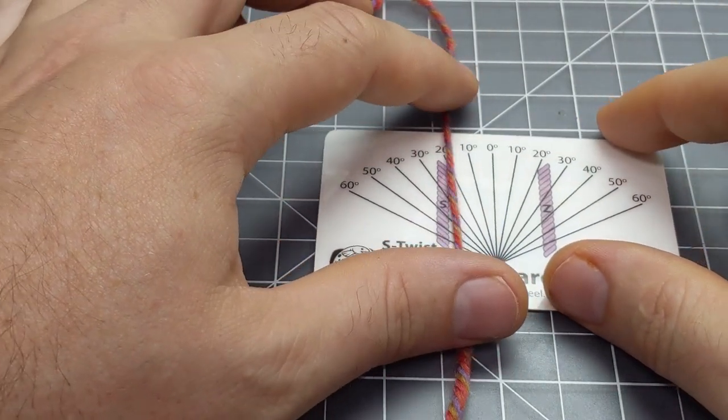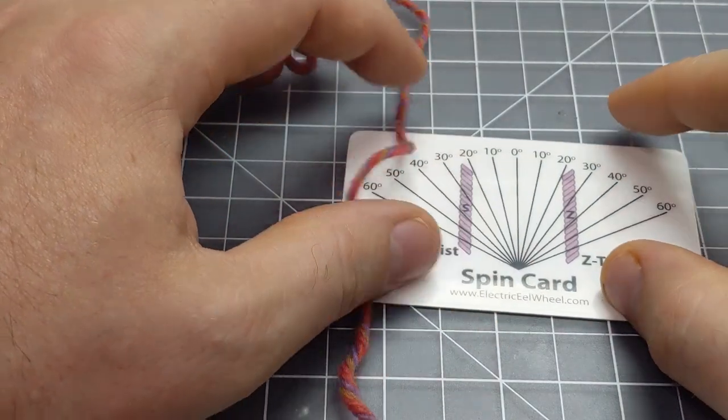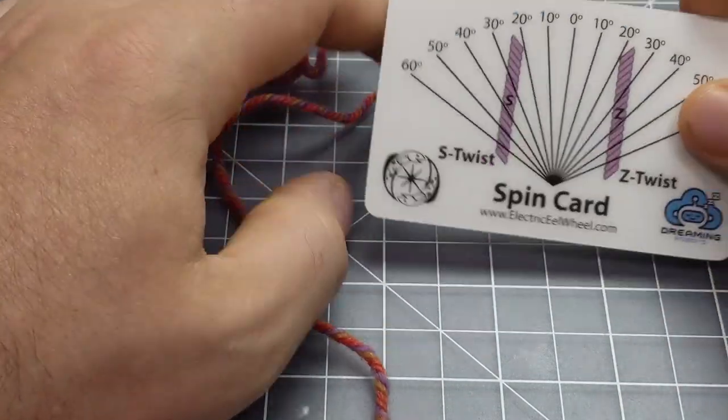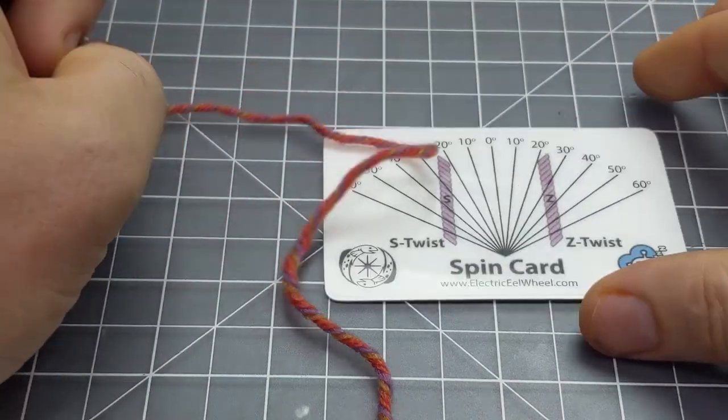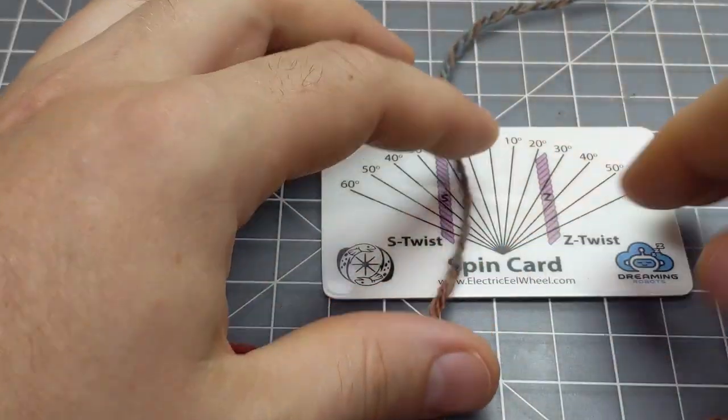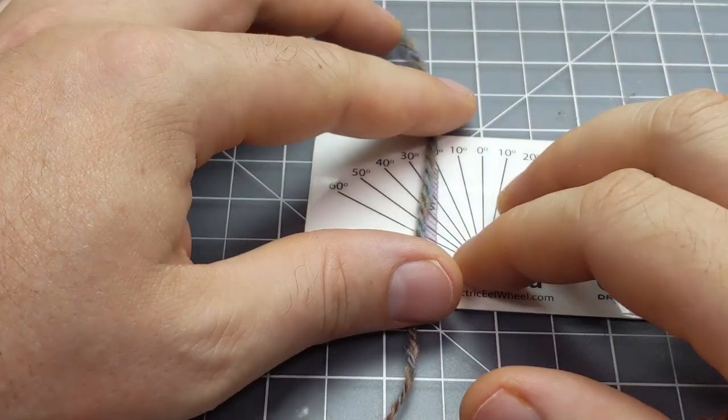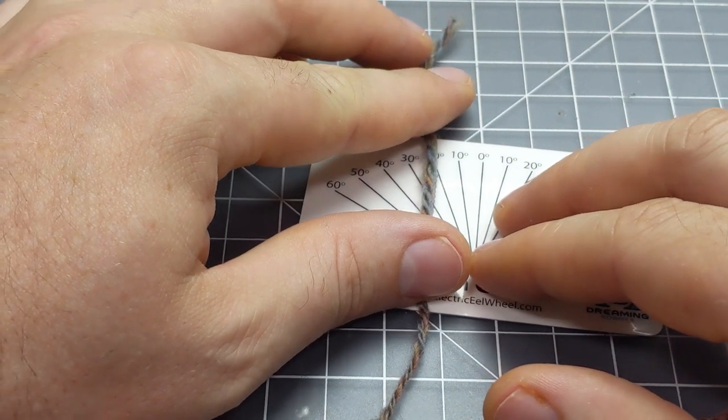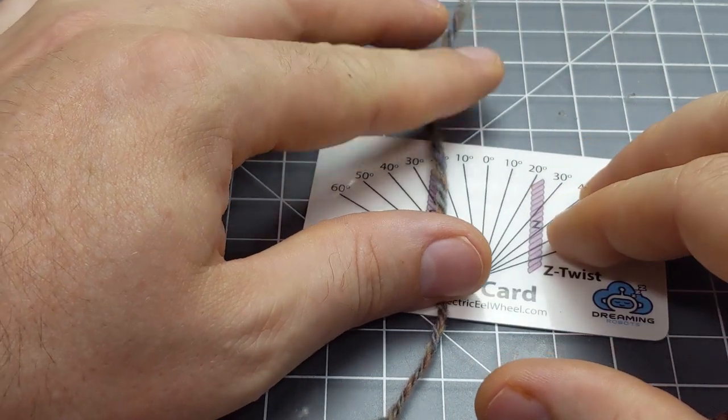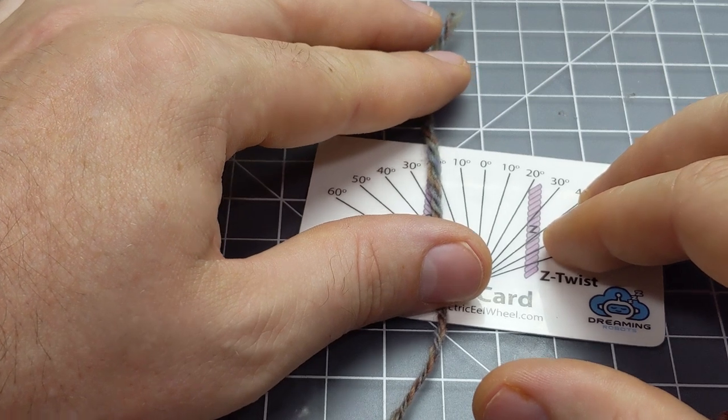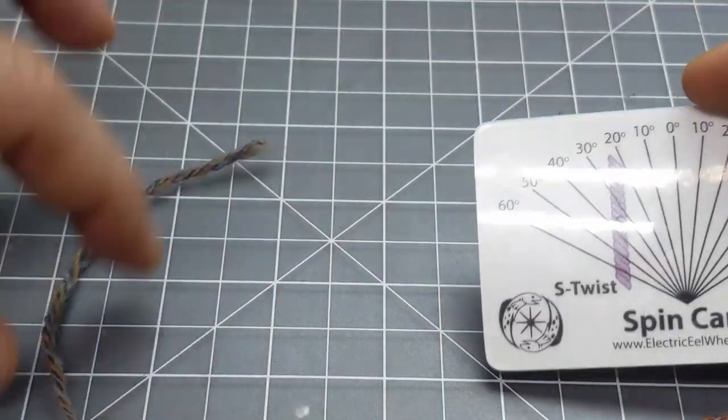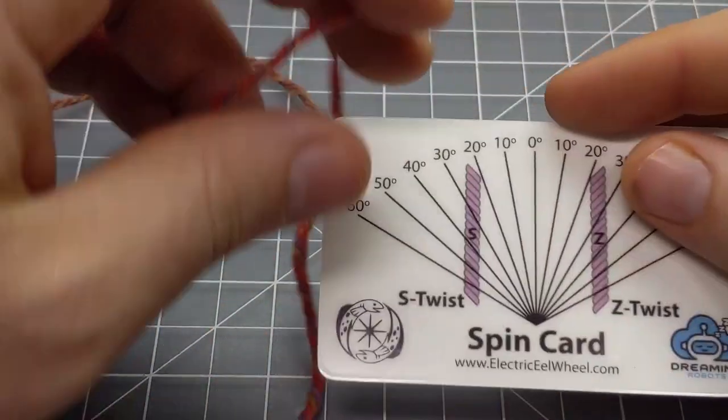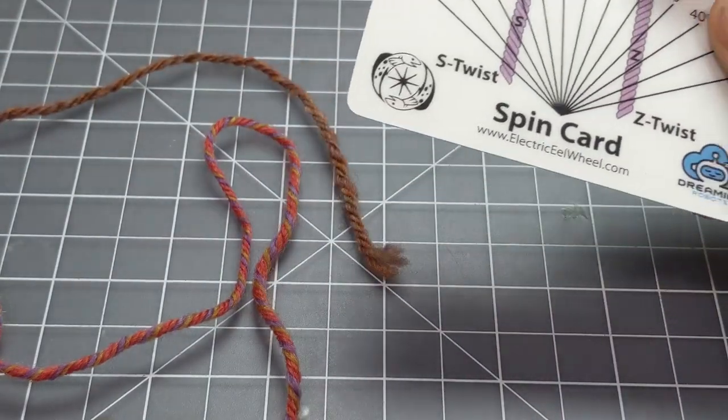And then test future yarns. Or maybe you're going for inconsistent yarn, in which case you probably don't want to use this kind of a guide. Here's another piece of yarn. And we'll just look at this one. So this is more loosely spun. You can see it's maybe 20 to 30 degrees. So neither one of these is right or wrong. It's just that they're spun differently.